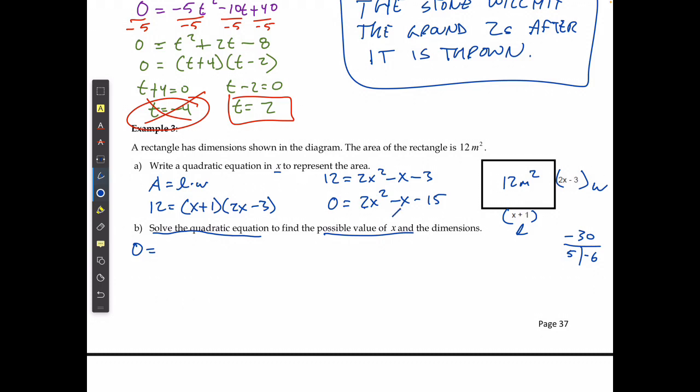So I'm going to split up the middle term. 2x squared plus 5x minus 6x minus 15. Continue factoring this by grouping.